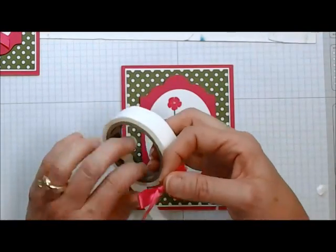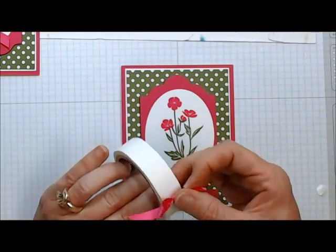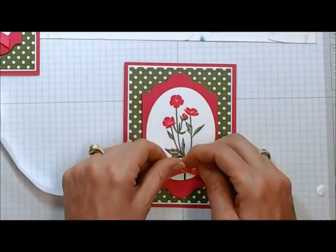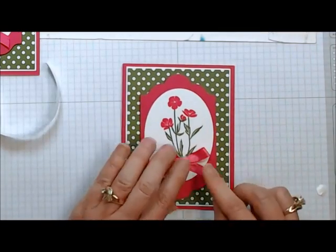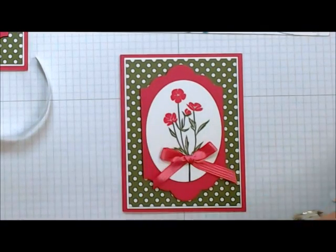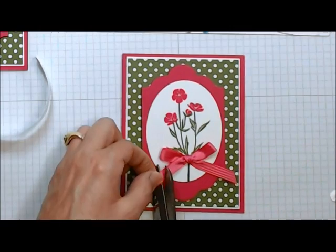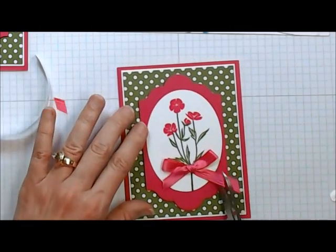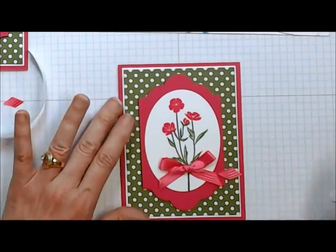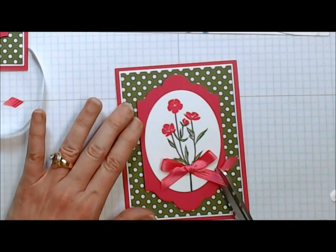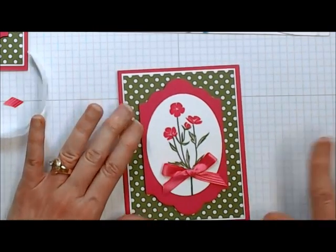Take my handy dandy mini glue dots. And I want my bow right there. And then I can come in with my craft scissors, trim that up. There we go.